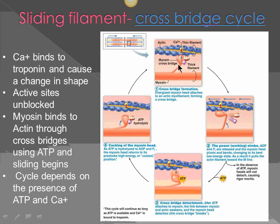Here we have the myosin filament with its head. It has ATP, which it breaks into ADP and phosphate — becoming energized. At the same time, calcium is released from the terminal cisternae. It binds to the troponin part of the actin filament, causing a conformational change so that the active sites are exposed.